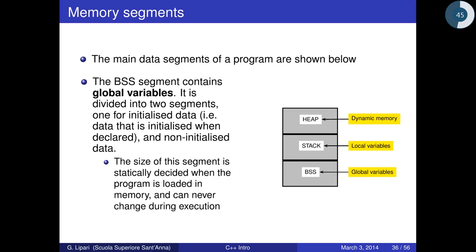Global and local variables stay in different memory segments. Global variables go into the BSS segment — divided into initialized data and non-initialized data. The size of this segment is statically decided by the compiler and is created when the program is loaded into memory — it never changes during execution.